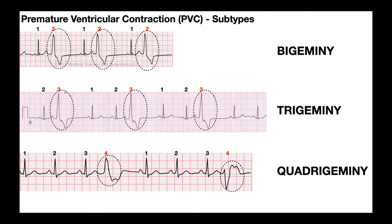Let's look at the subtypes of PVCs. There are three here: bigeminy, trigeminy, and quadrigeminy. The prefixes bi, tri, and quad refer to how many QRS complexes you have to count before you get the PVC. For bigeminy, I look at a normal QRS — that's one — and then the very next one is the abnormal PVC, number two. This repeats: normal is one, PVC is two. The PVC occurs every two QRS complexes or every two cardiac cycles. This pattern is bigeminy, and technically monomorphic because they all go up in the same direction.